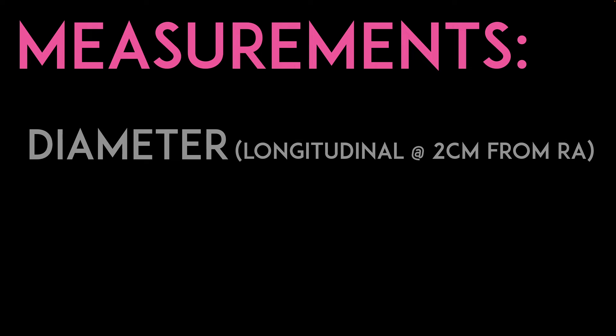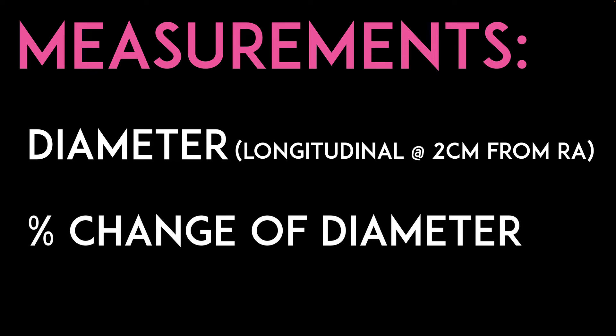We can just eyeball this, but if you want actual measurements, you need to measure the diameter in a longitudinal axis at about two centimeters from the right atrial junction and calculate the percent change.